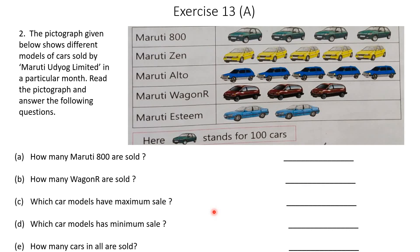Moving to the next question: the pictograph given below shows different models of cars sold by Maruti Udyog Ltd in a particular month. Read the pictograph and answer the following questions. Here, different types of cars sold by Maruti Udyog Ltd are shown, and the key states that 1 car stands for 100 cars — so each car image equals 100 cars.